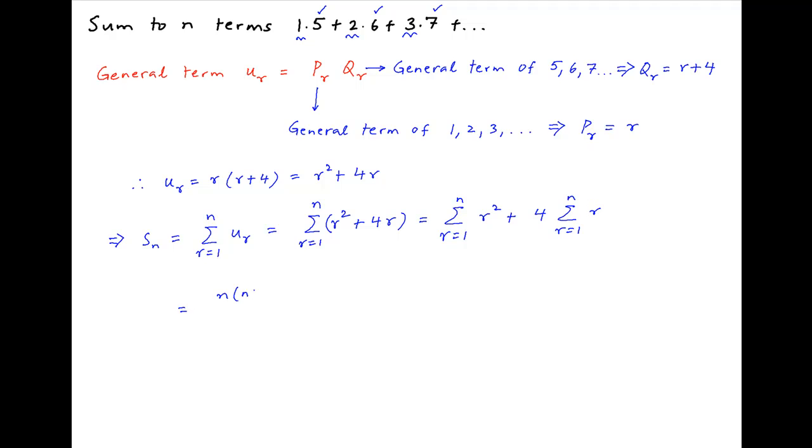Putting in the values of summation R square and summation R, we get S_n is equal to n times n plus 1 times 2n plus 1 upon 6, plus 4 times n times n plus 1 upon 2.